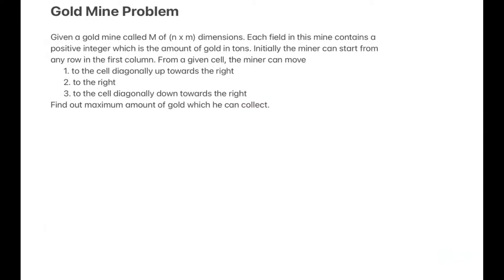If we forget all the stuff about gold and gold mine, all we need to do is: we are given a matrix and we are supposed to move along the columns. We can go diagonally right up, diagonally right down, or just right, and while moving we need to maximize the sum of the elements that we encounter. I'll draw it on the board and then we can talk about our approach.